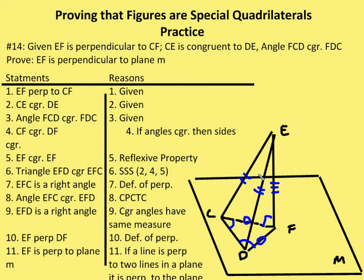I know angle EFC is a right angle by the definition of perpendicular lines. Angle EFC is congruent to angle EFD by CPCTC, since the two triangles are congruent by SSS. Therefore, angle EFD is a right angle, because congruent angles have the same measure, and if an angle measures 90 degrees it is a right angle. Since EFD is a right angle, EF is perpendicular to DF by the definition of perpendicular lines. Finally, EF is perpendicular to plane M, because if a line is perpendicular to two lines in a plane, it is perpendicular to the plane itself.